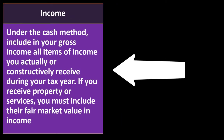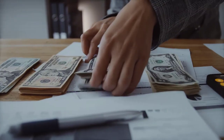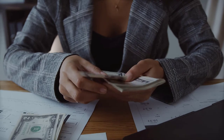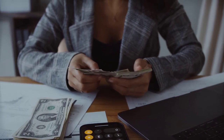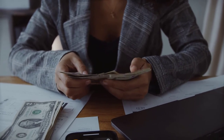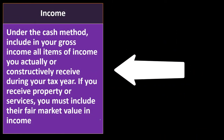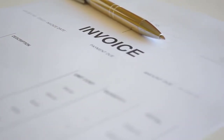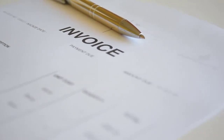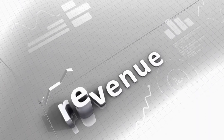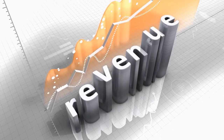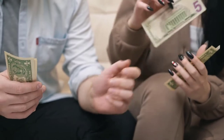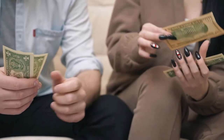Income: under the cash method, include in your gross income all items of income you actually or constructively received during the tax year. If you receive property or services, you must include their fair market value in income. The key is that you record income when you get the cash. Under an accrual method's revenue recognition principle, you record income when you did the work, whether or not you received the cash. Under a cash basis method, you don't record income until you receive the cash — not when you actually do the work. The key terms are income you actually or constructively received during the year.